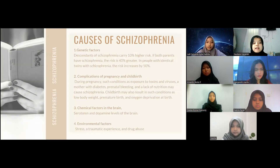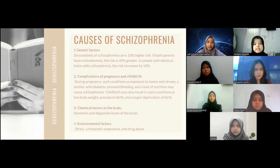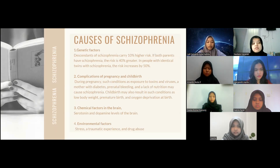The causes of schizophrenia include genetic factors, complications of pregnancy and childbirth, chemical factors in the brain, and environmental factors. Regarding genetic factors, descendants of someone with schizophrenia carry a 10% higher risk. If both parents have schizophrenia, the risk is 40% greater. In people with identical twins who have schizophrenia, the risk increases by 50%.